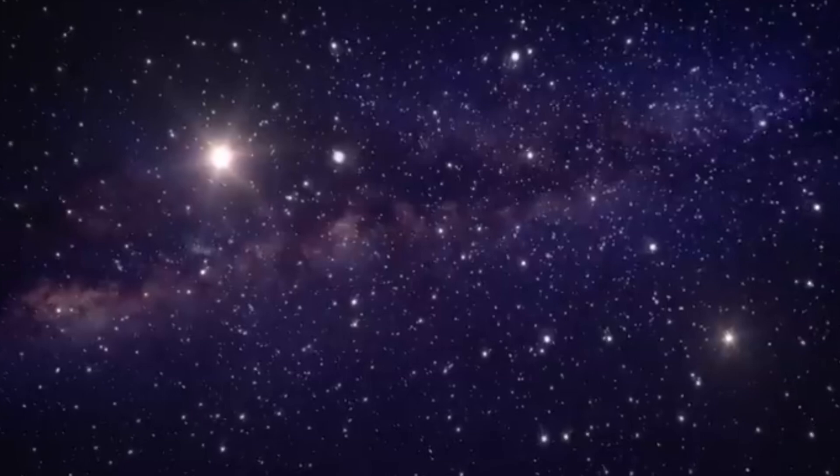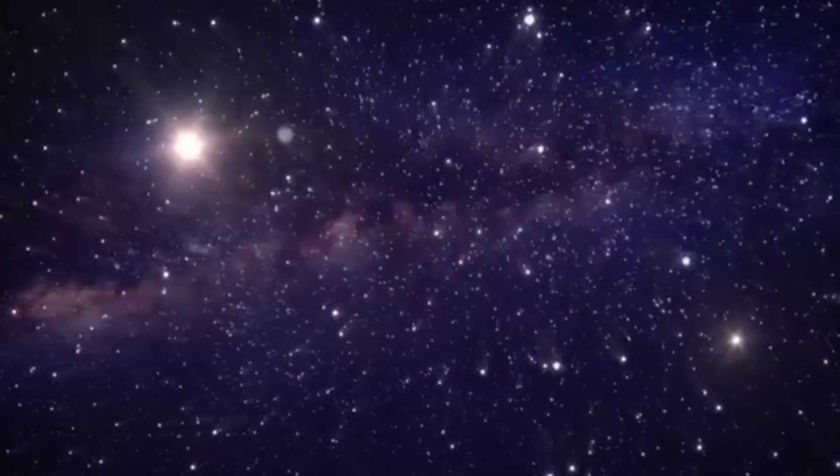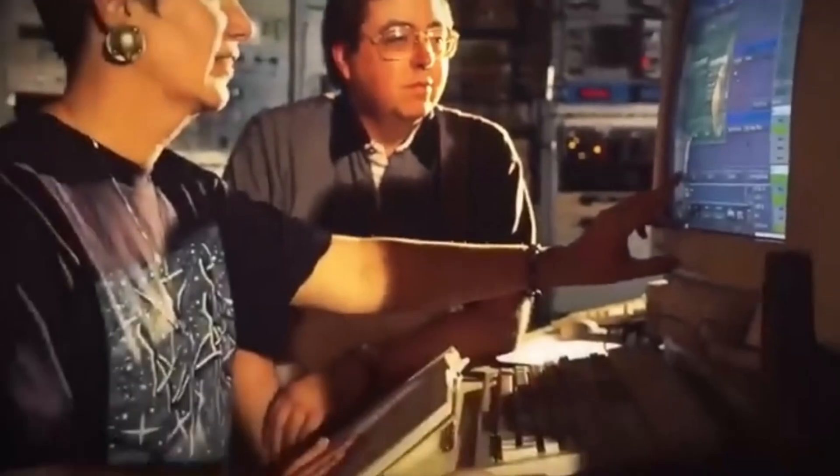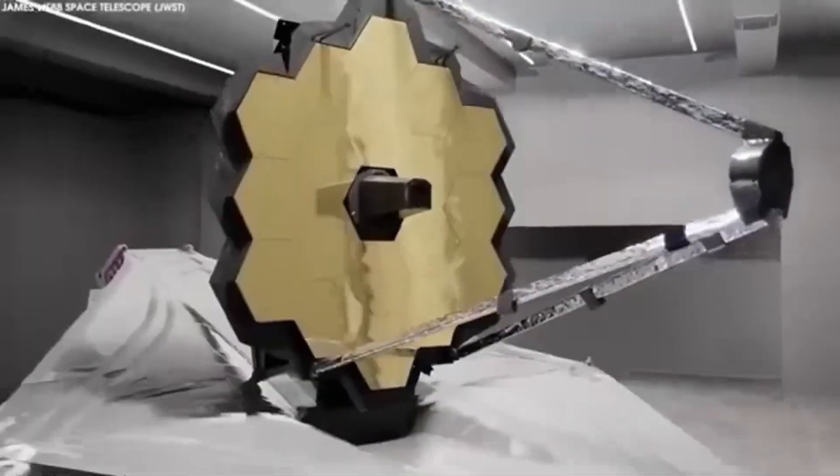The JWST's initial mission will focus on the TRAPPIST-1 planetary system, which revolves around a calm red dwarf star and has seven Earth-sized rocky planets. Three of these planets are in the habitable zone where liquid water might exist.